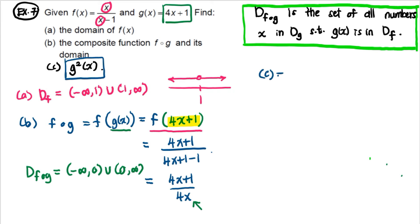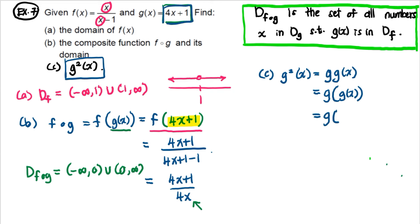For g²(x) = g(g(x)): g(x) = 4x + 1, so substitute inside g again: g(4x + 1) = 4(4x + 1) + 1 = 16x + 4 + 1 = 16x + 5.